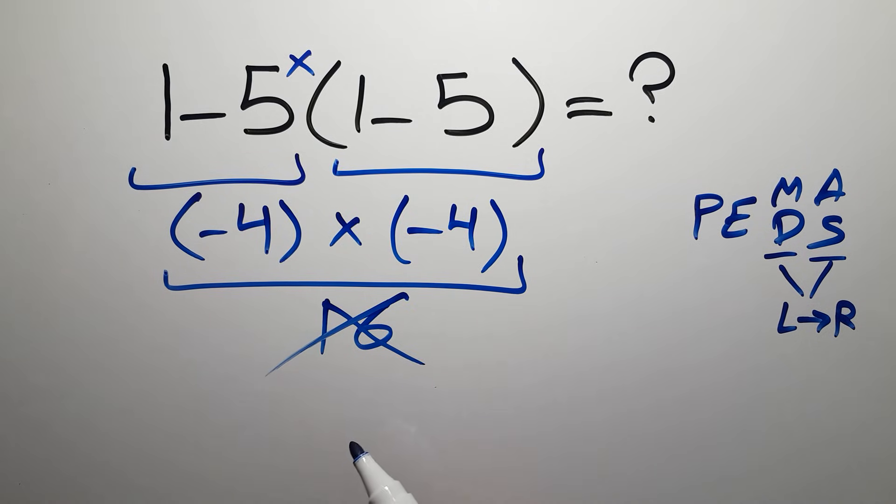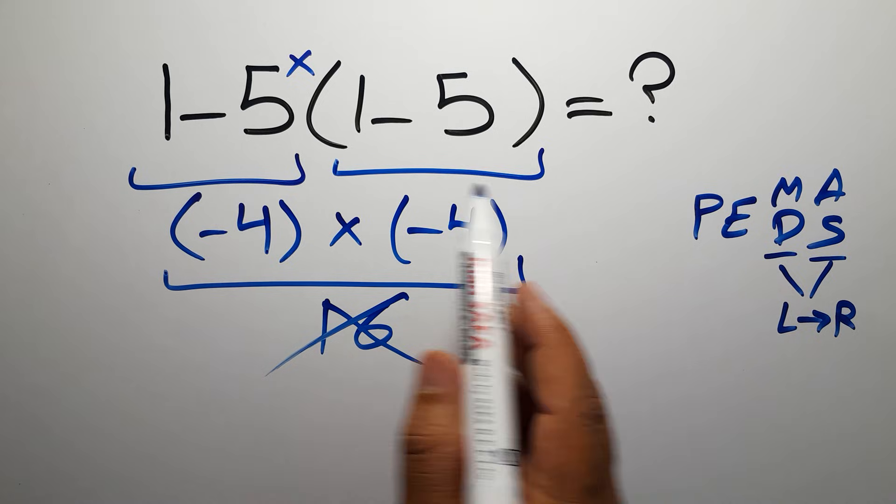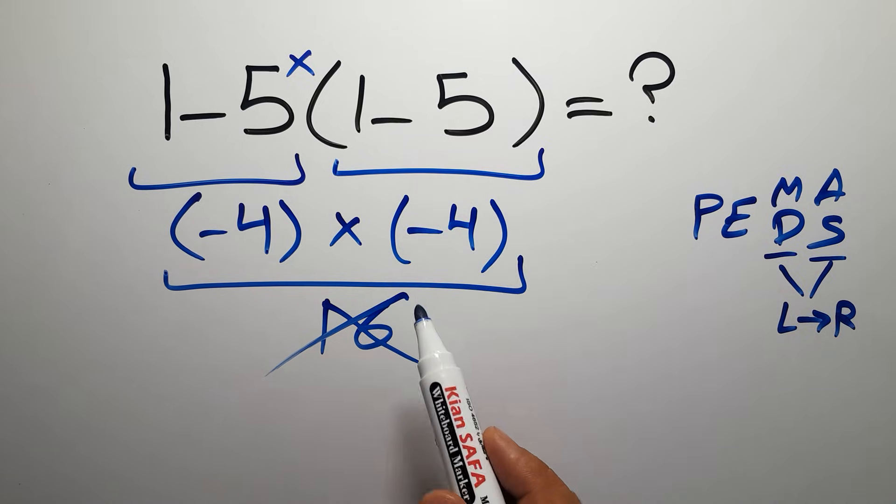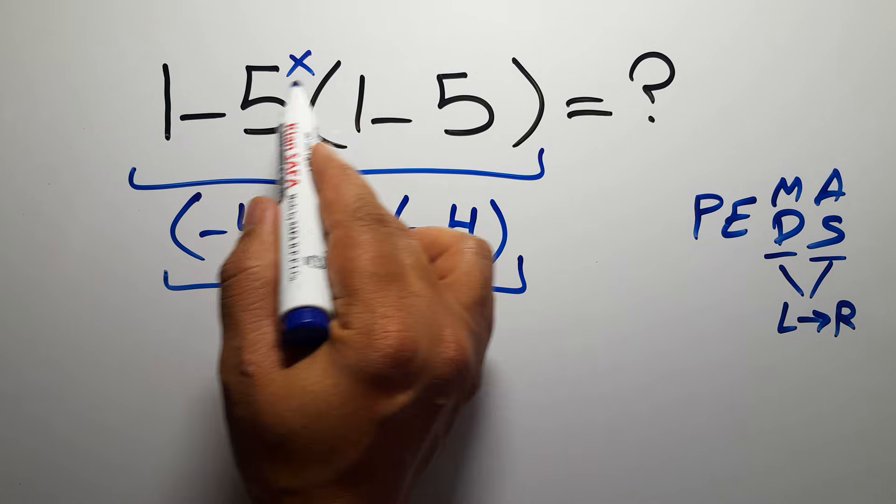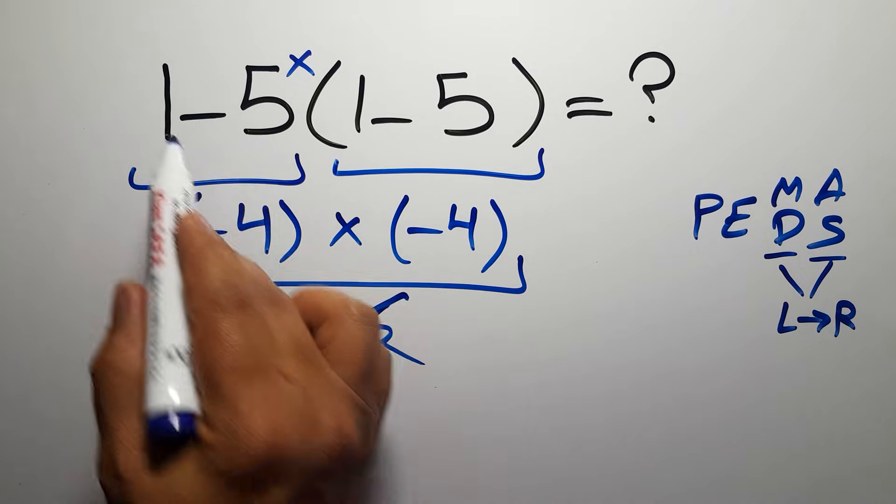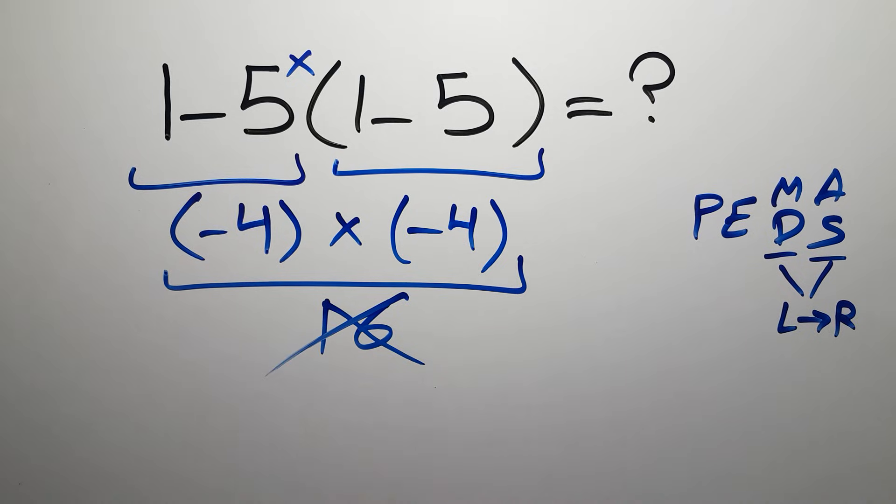According to the order of operations, first we have to do the parentheses, not the subtraction. After the parentheses, we do the multiplication, and finally the subtraction. Let's do it.